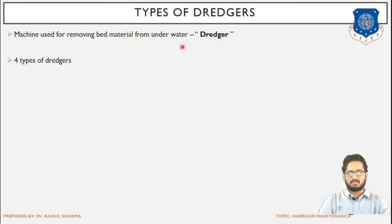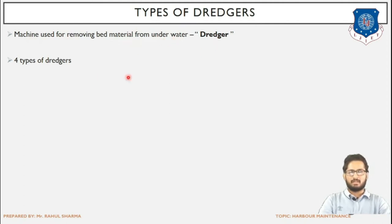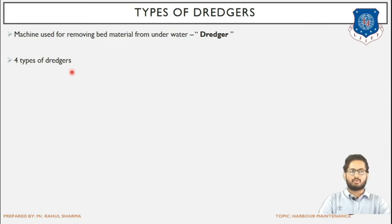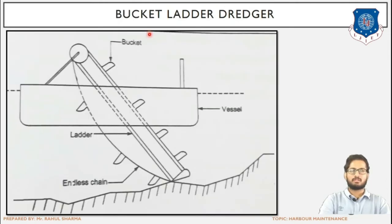Types of dredgers: the machine used for removing bed material — that is, for carrying out the dredging operation — is termed a dredger. Basically there are four types of dredger. Three amongst the four are mechanical dredgers and one is a hydraulic dredger.